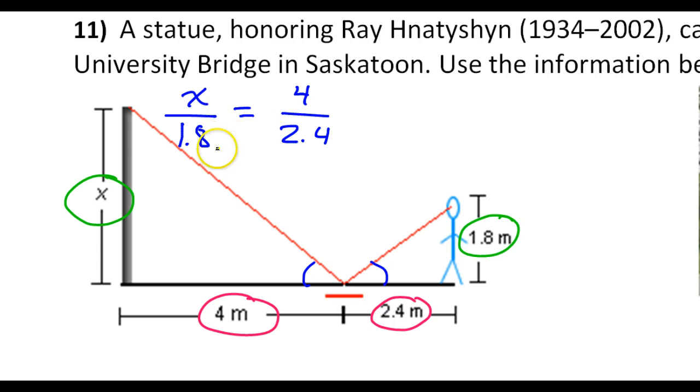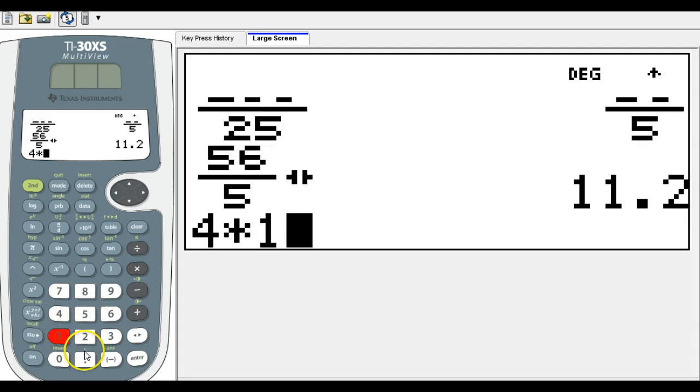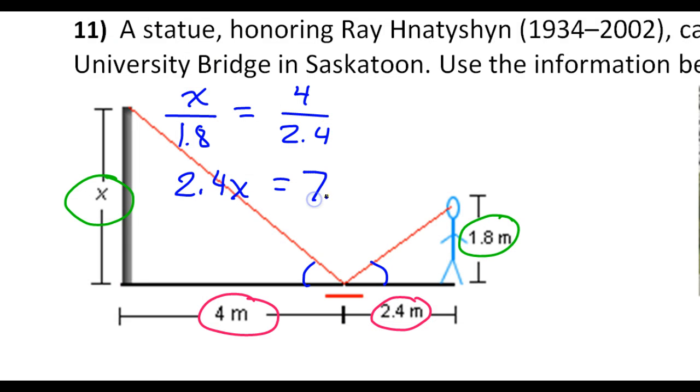So then it's just a matter of cross-multiplying. That's going to give us 2.4X is equal to whatever that is, 4 times 1.8. So that is 7.2. Divide both sides by 2.4, and that's it.